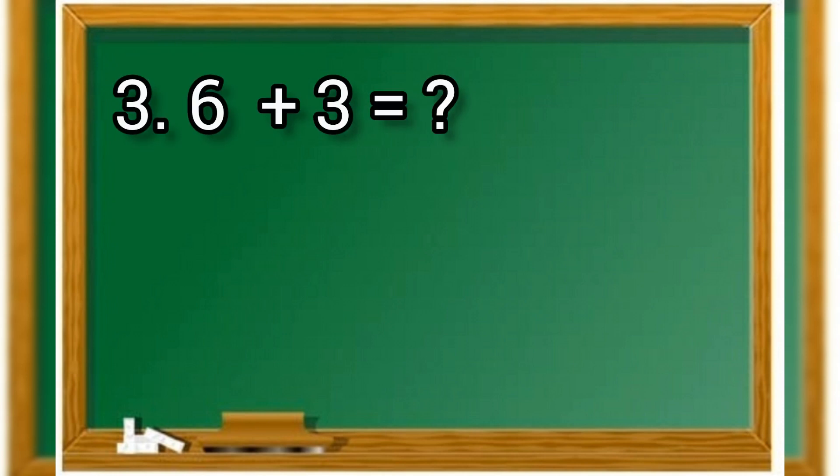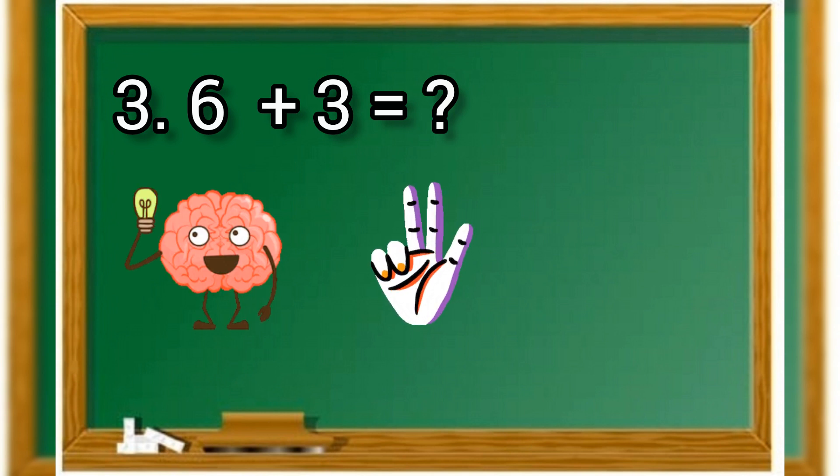Let us try one more example: 6 plus 3. 6 in mind and 3 in fingers. 6 in mind, after 6 it is 7, 8, 9. So the answer is 9.